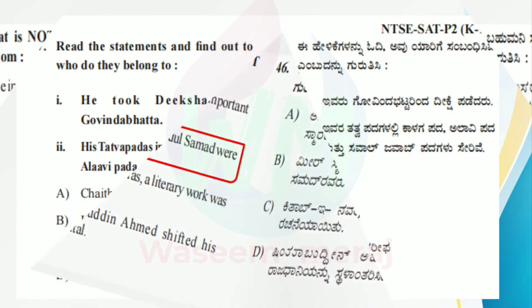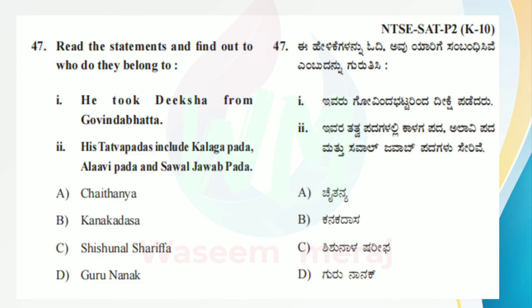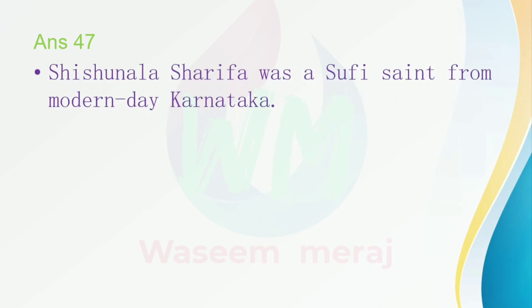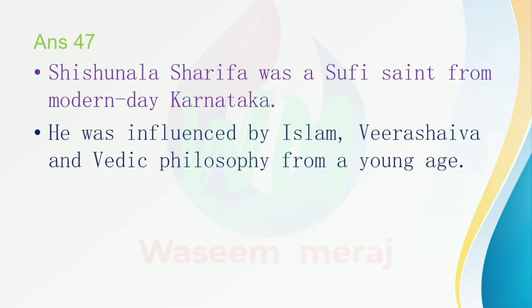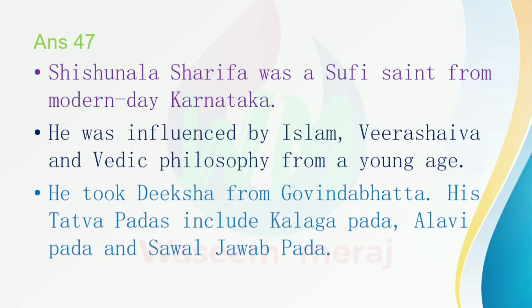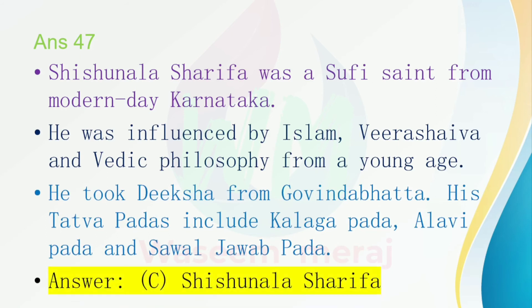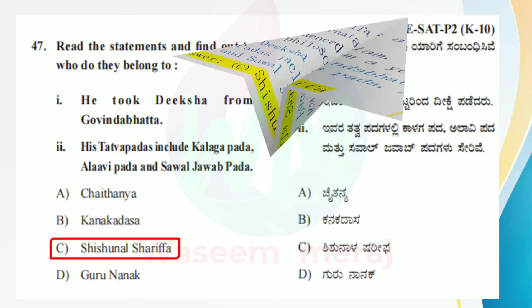Question number 47: Read the statements and find out who they belong to. First: he took Diksha from Govinda Bhatta. Second: his Tattva Padas include Kalagapada, Aalavi Pada and Savaljawab Pada. Options: A — Chaitanya, B — Kanakadasa, C — Shishunala Sharifa, D — Guru Nanak. Answer: Shishunala Sharifa was a Sufi saint from modern-day Karnataka. He was influenced by Islam, Veera Shaiva and Vedic philosophy from a young age. He took Diksha from Govinda Bhatta, and his Tattva Padas include Kalagapada, Aalavi Pada and Savaljawab Pada. So the right answer is C — Shishunala Sharifa.